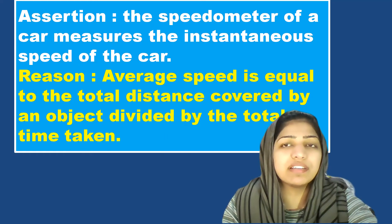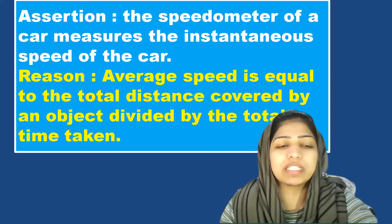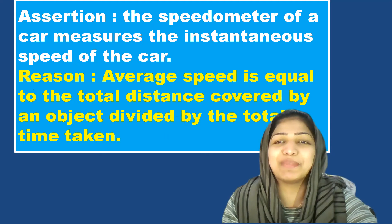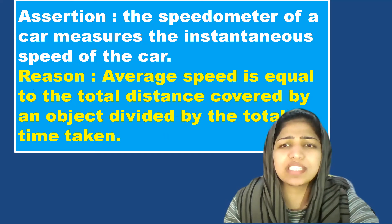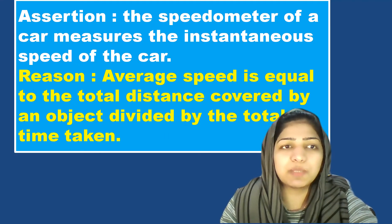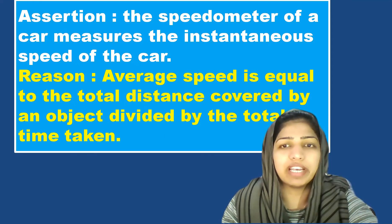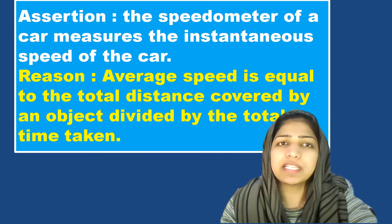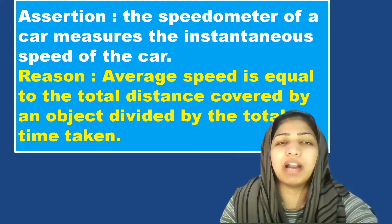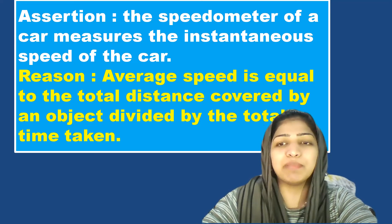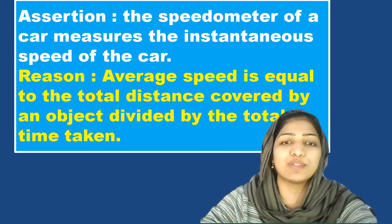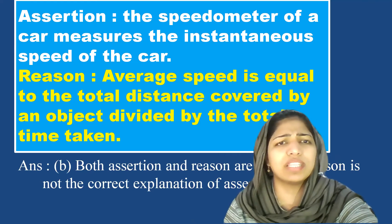The speedometer of a car measures the instantaneous speed of the car. The reason is, average speed is equal to total distance covered by an object divided by total time taken. This is the correct definition of average speed. The assertion statement is true, the reason statement is true. But the assertion and reason are independently true statements — they don't make any meaningful connection. That means reason is not the correct explanation of assertion.